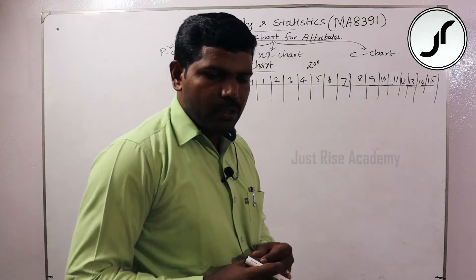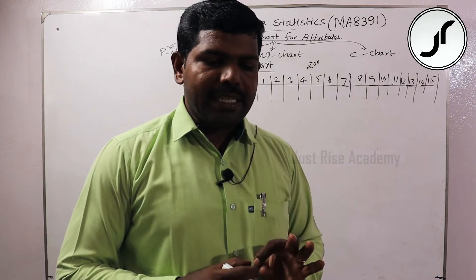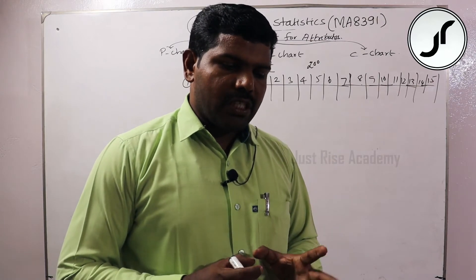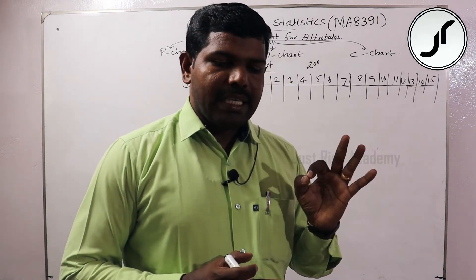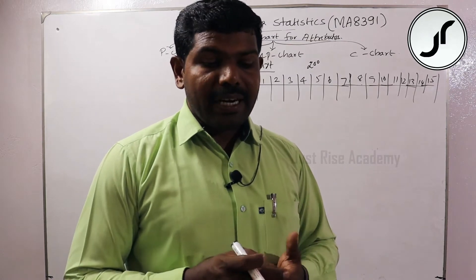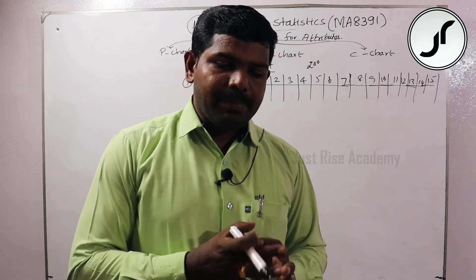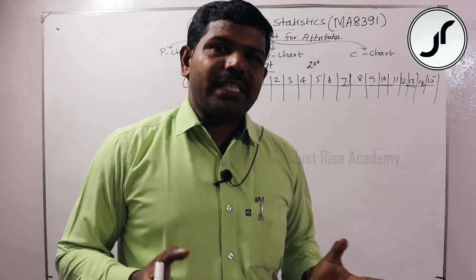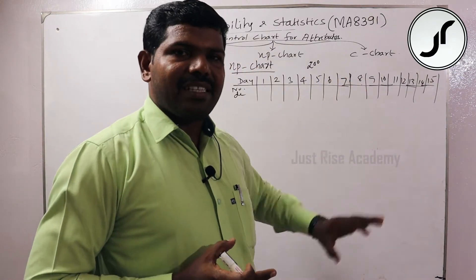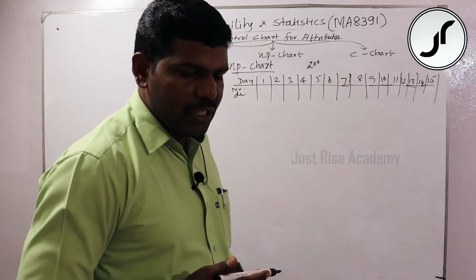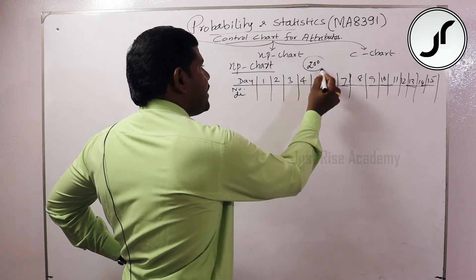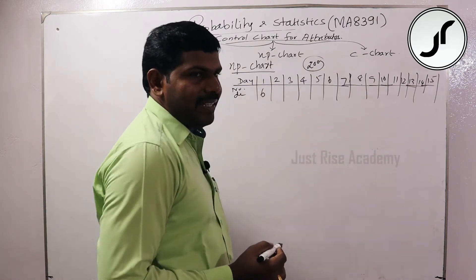Using the following data, construct the NP chart and comment on the state of control. Assume that 200 items are inspected each day. That's why we put this table together. Construct the NP chart — number of defectives, first day.